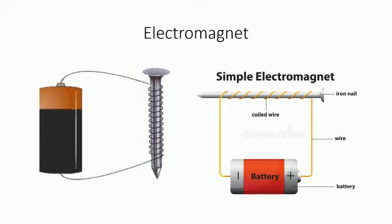Wind the copper wire around the nail as shown in the picture. Join both the ends of the wire to the cell. Now take the pins near the head of the nail. What do you see?